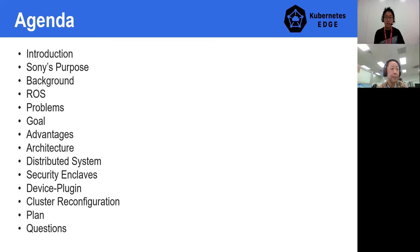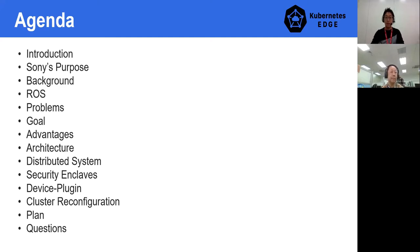Here is today's agenda for this presentation. Starting with the introduction, we will go through the background, the problems and the requirements, especially for Edge IoT use cases. We will talk about what we want to achieve using Kubernetes as an architecture with distributed system, and then go deeper about robotics examples with Kubernetes to support distributed system on Edge platform.